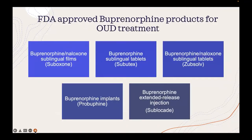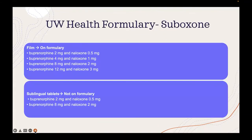Let's discuss the FDA-approved buprenorphine products for OUD treatment. There are sublingual films, sublingual tablets, implants, and injections. Oral absorption is poor due to first-pass metabolism. The transdermal route is also poor, but sublingual is effective as it bypasses first-pass metabolism, and buccal is most efficient with the highest bioavailability.